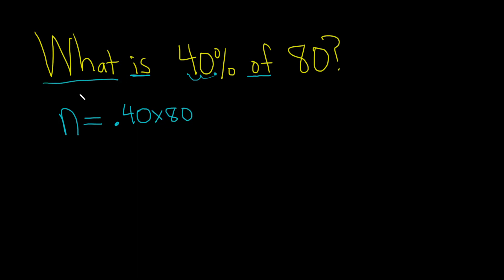Again, what is what we're looking for. I gave it a name, I decided to call it n. Is means equals. The 40% turns into 0.40. Of means multiply, and then we have the 80. If you work this out by hand or put it in your calculator,